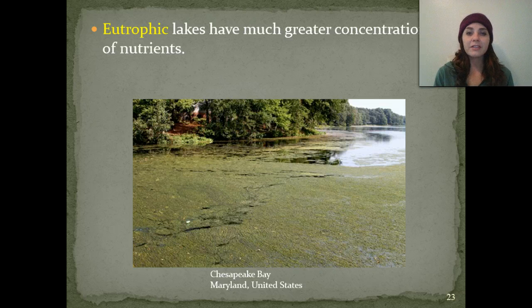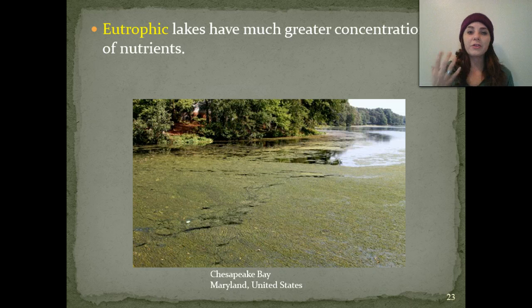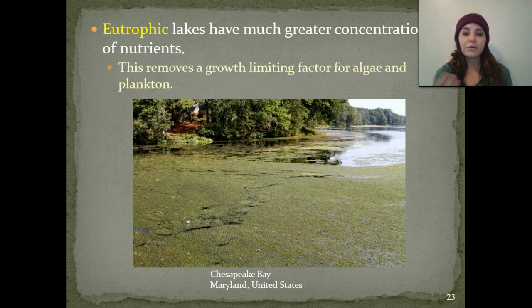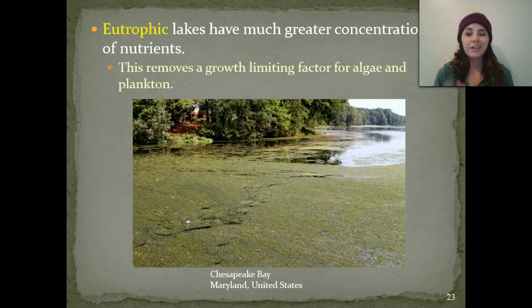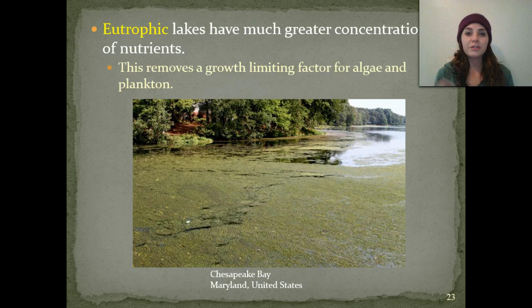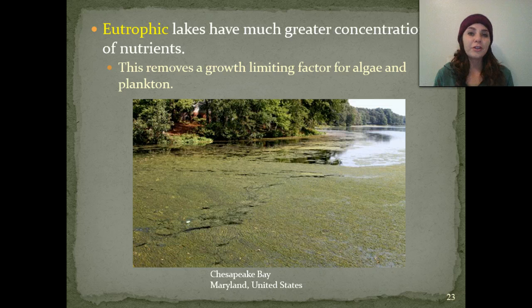The second type of lake is eutrophic. Eutrophic lakes have a very great concentration of nutrients. This removes a lot of the growth-limiting factors of algae and plankton, so we're going to have huge primary productivity in these areas. Sometimes the primary productivity actually gets too high and takes over, and we don't see a lot of consumers. Most of the time, high productivity is a good thing, because the more primary producers there are, the more consumers we're going to be able to support.